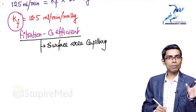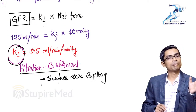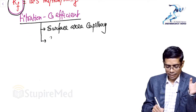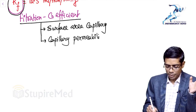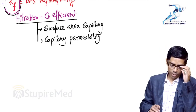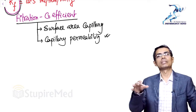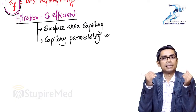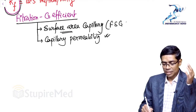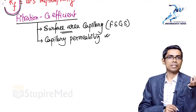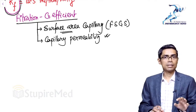The second parameter is capillary permeability. If permeability decreases due to disease — for example, multiple depositions on the filtration barrier — GFR will be reduced. Similarly, if capillary surface area decreases, as in FSGS (focal segmental glomerulosclerosis), GFR decreases because Kf is reduced. So GFR depends on both surface area and permeability of the glomerular capillaries.